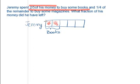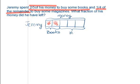So 2 out of the total of 5 parts has been used for buying books, and this whole bar represents Jeremy's money. The second part says 1/4 of the remainder — not 1/4 of the money, but 1/4 of the remainder. Let's mark out this area — this is the remainder.